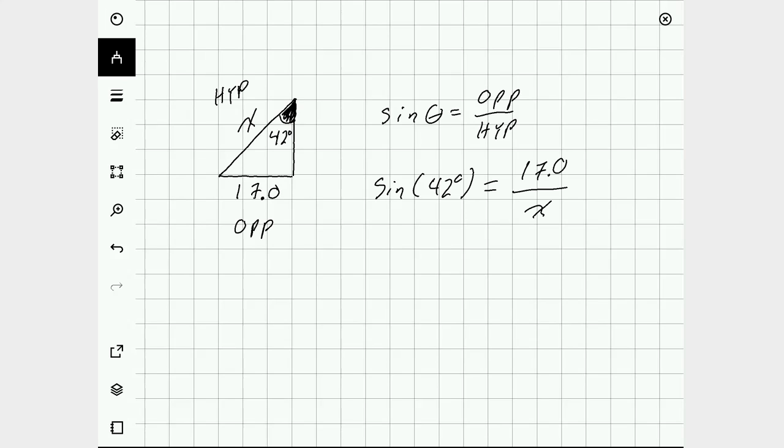Multiply both sides of the equation by x to clear out that fraction. And then divide both sides of the equation by sine of 42 to get x by itself.